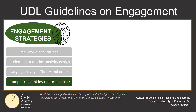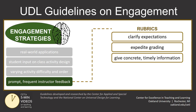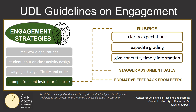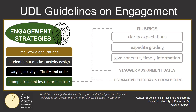And finally, think about how your prompt and frequent feedback to students might foster their engagement in a course. Use rubrics to clarify your expectations and expedite the grading process, while also giving concrete and timely information on how learners can improve their performance going forward. Or stagger assignment dates so that you don't get overloaded with providing feedback. Don't discount the formative feedback peers can provide, especially if you use a grading rubric or guideline.